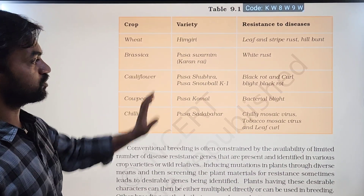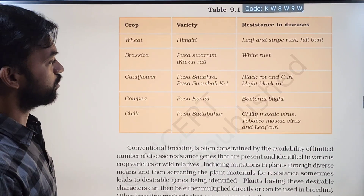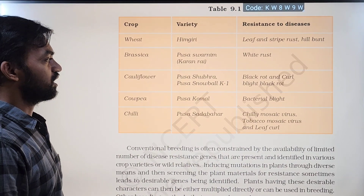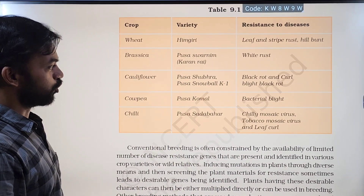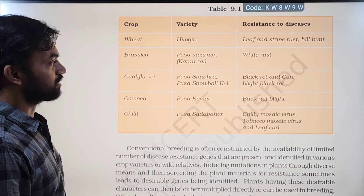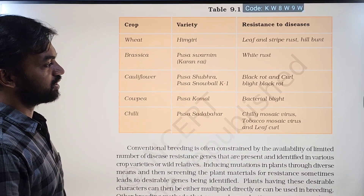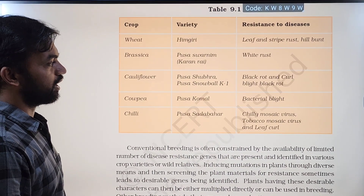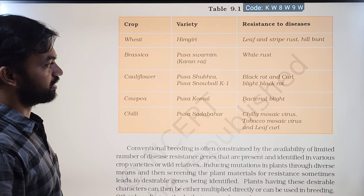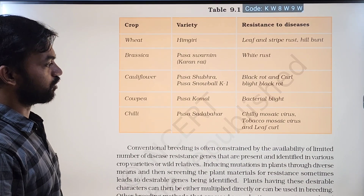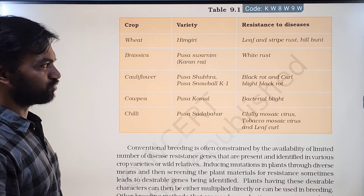Cauliflower varieties Pusa Shubra and Snowball K1 show resistance to black rot and curl blight diseases.